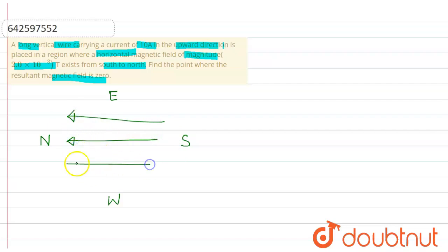So direction of magnetic field is from south to north. Consider this is a horizontal magnetic field BH.